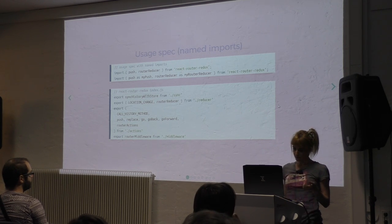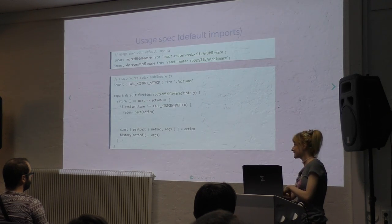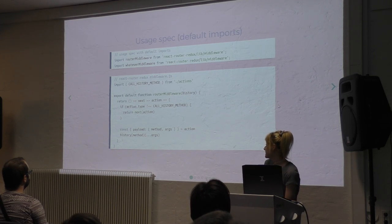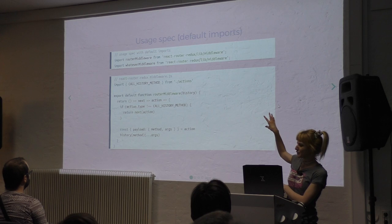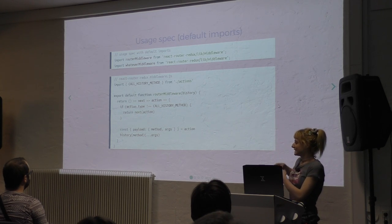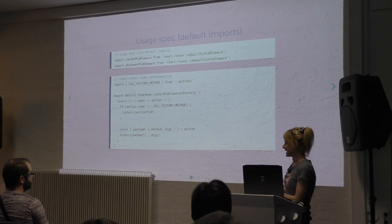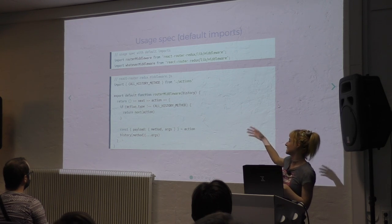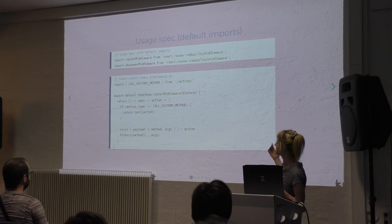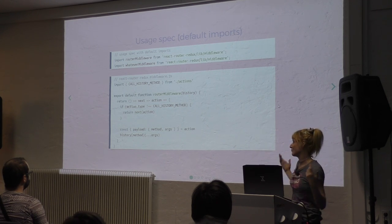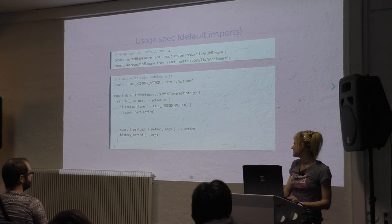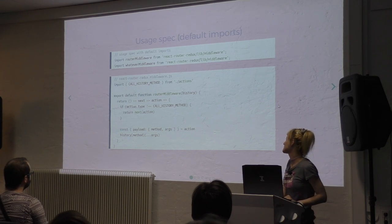You can see the last line of the index exports the router middleware from middleware. So the library itself internally is using the other kind of imports, which are default imports. With default imports, that's how you would include the middleware file, for instance — though this is not really recommended in the documentation. You would define the path to the file. A default is exported, and you could call it whatever you want because you like the sound of it. That's how you would use default imports.